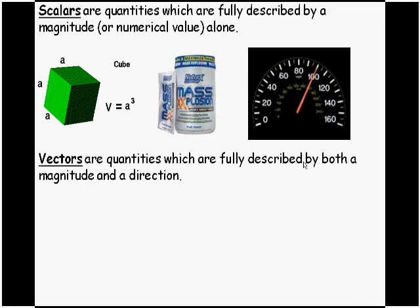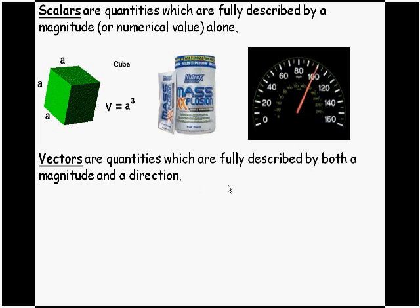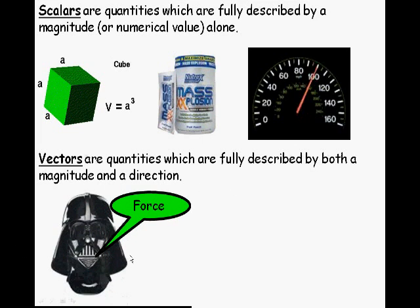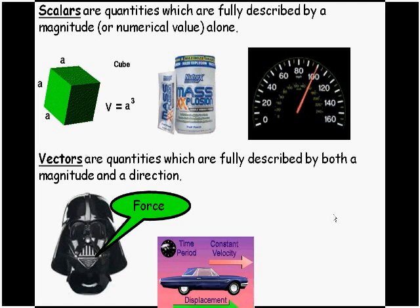Vectors are quantities which are fully described by both a magnitude and a direction. Force - you'll have seen lots of force diagrams with arrows on objects, and two or three arrows sometimes, and you're asked to say which direction you think the object is going to move in and how it's going to behave, whether it's going to accelerate or remain at a constant velocity and so on.